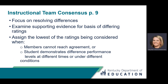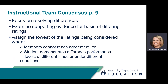Consensus must be achieved when the student's instructional team meets to determine the final rating on ESAR items. For many items, the supporting evidence will lead to immediate consensus. For this reason, team members may wish to focus on discussing and resolving any differences for items about which there is no general agreement. In cases of non-agreement, team members should examine the supporting evidence for the basis of differing ratings. If team members cannot reach agreement, or if they determine the student demonstrates different performance levels at different times or under different conditions, the lowest of the ratings being considered must be assigned to the item.